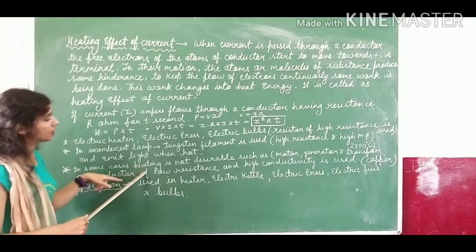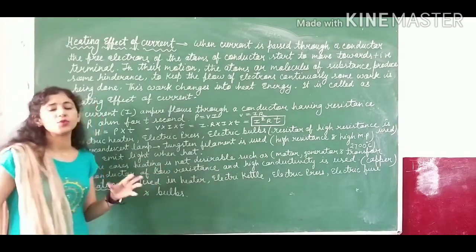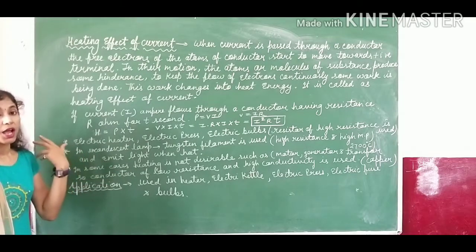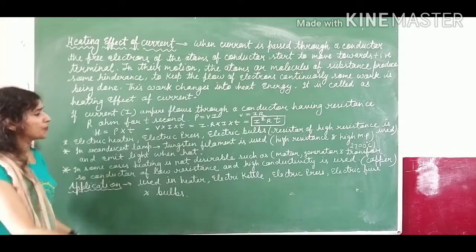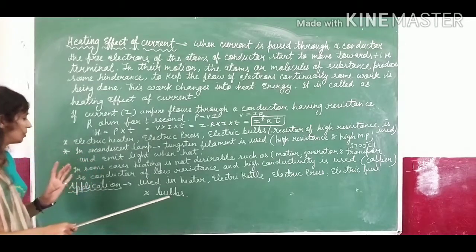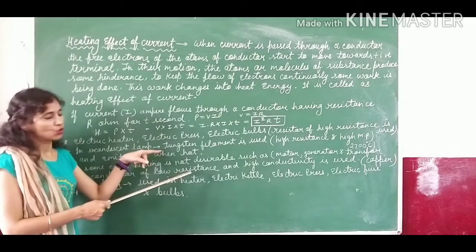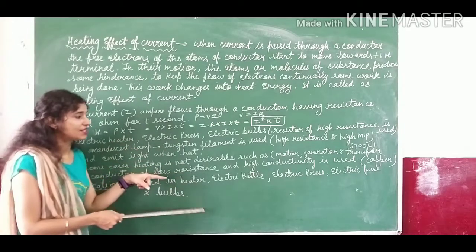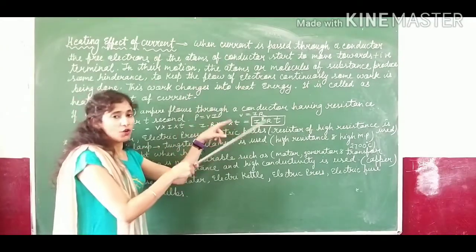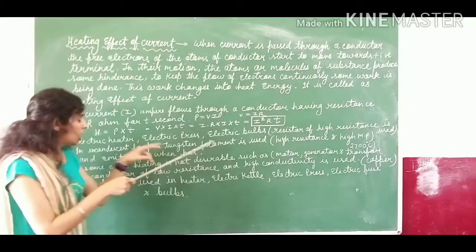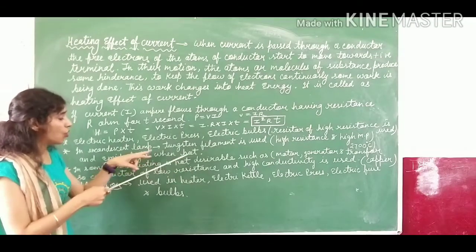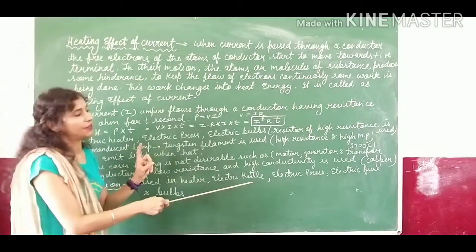In some cases, heating is not desirable — for example, if an electric motor has to work, you pass electric current through it but it should not produce heat energy. Similarly, in generators and transformers, electric current is used but no heat energy should be produced. For these, conductors of no resistance and high conductivity are used.